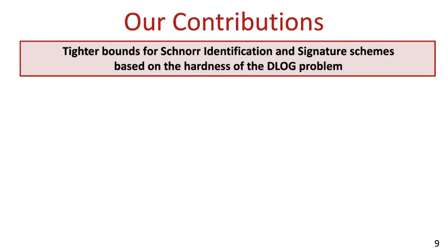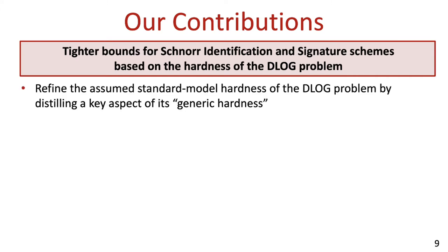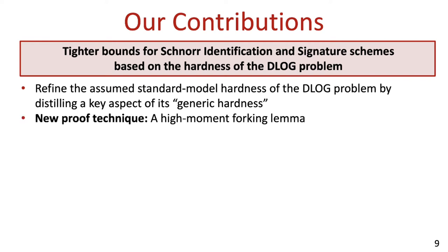In this work, we answer this question in the affirmative by proving tighter bounds for Schnorr's ID and signature schemes based on the hardness of the D-log problem. First, we refine the assumed hardness of the D-log problem in the standard model by revisiting its generic group hardness and distilling a key aspect of it. Then, we introduce a new proof technique which generalizes the forking lemma to a high-moment variant of it, and use this new technique and the refined assumption in order to derive tighter bounds for Schnorr's schemes.